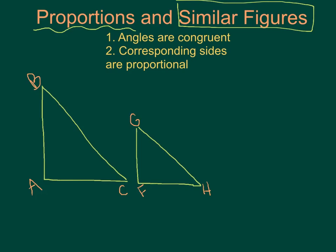A similar figure means two figures where their angles are congruent. Look at the triangles below. They're saying that all of their angles are congruent: two 90 degree angles, and then angle B and angle G are congruent, angle C and angle H are congruent.